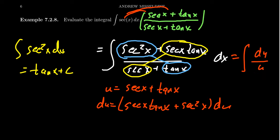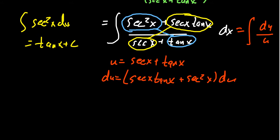This integral will then become the integral of du over u. How fantastic. That's really great. And so the antiderivative of du over u, of course, is the natural log of u. So we get the natural log of the absolute value of u plus a constant.